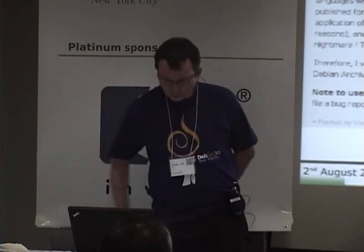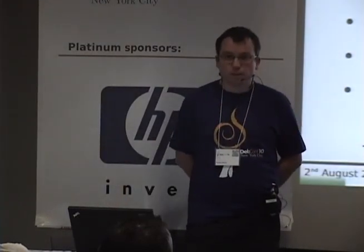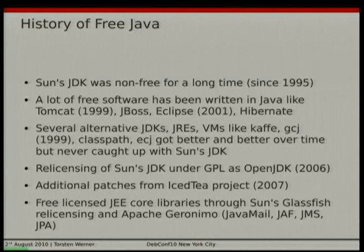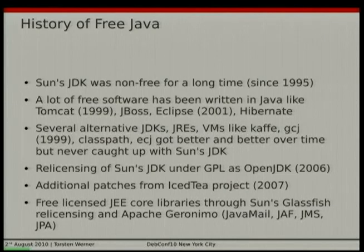We must build everything from source. We must check every source package for correct licensing and so on. Some of the history of free Java: the Sun JDK was non-free software for most of its time since it was released in 1995. But a lot of free software had already been written, something like Tomcat released in 1999, JBoss, Eclipse released in 2001, and Hibernate — just to name some of the free Java projects that have existed for some time.